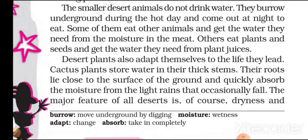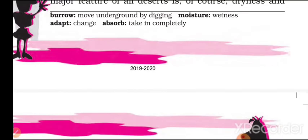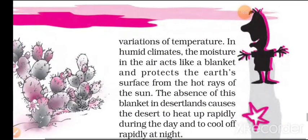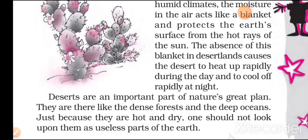The major feature of all deserts is of course dryness. The moisture in the air acts like a blanket and protects the earth's surface from the hot rays of the sun. The absence of this blanket in desert lands causes the desert to heat up rapidly during the day and to cool off rapidly at night. Deserts are an important part of nature's great plan — they are there like dense forests and deep oceans. Just because they are hot and dry, one should not look upon them as useless parts of the earth.